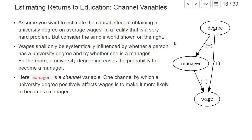This is in reality a very difficult problem because there are many variables we cannot really control for. But let's assume we have a very simple world described graphically here. If you obtain a university degree, you have a direct positive effect on your wage, and you are also more likely to get a managing position later in your job. Being a manager also has a positive effect on your wage. Being a manager here is a so-called channel variable — basically one channel by which having the university degree will in the end affect your wage.